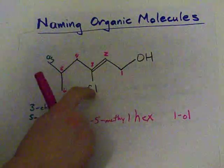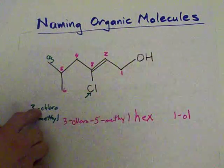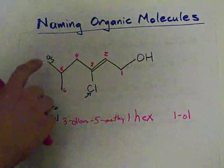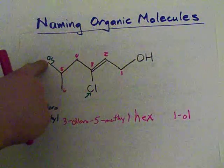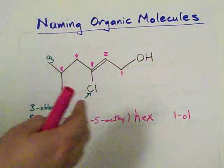Now, sometimes you'll have two chlorines attached to it. That would make it a dichloro. Or four methyl groups attached to stuff makes it a tetramethyl.